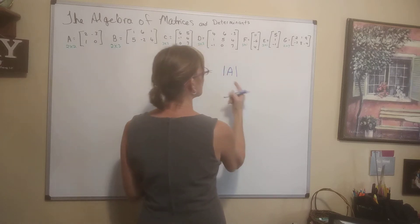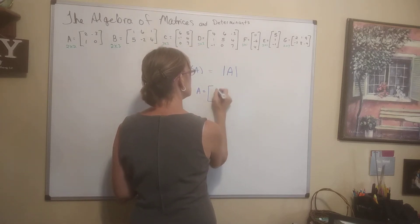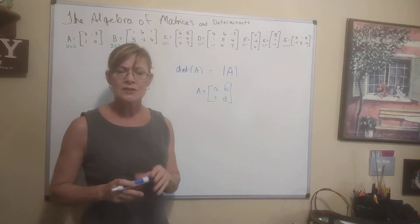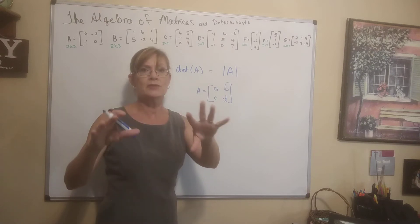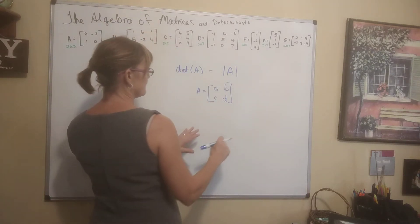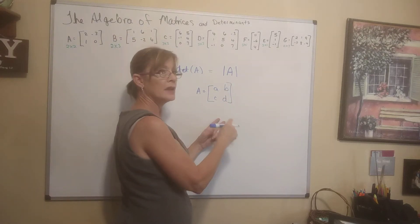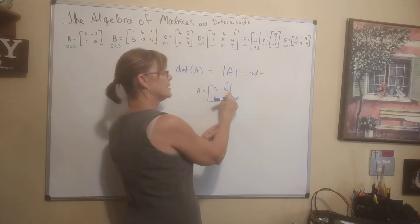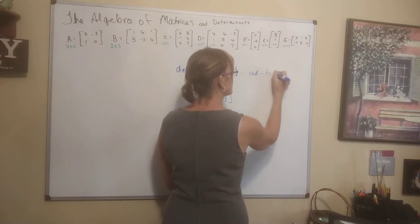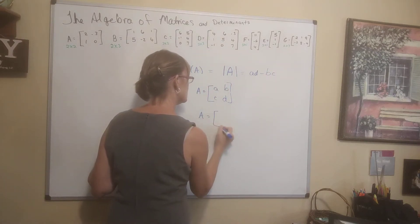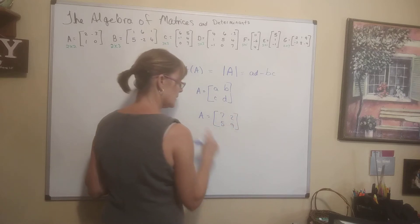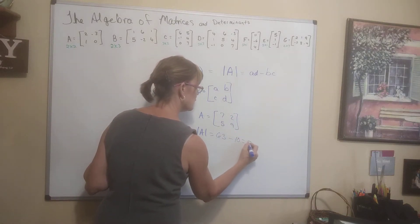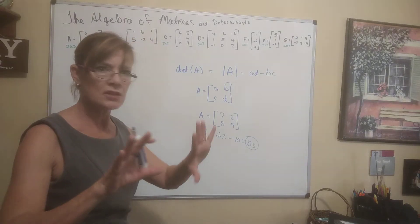The determinant of a 2 by 2 matrix A = [a, b; c, d] is a times d minus b times c. The notation for determinant is either det(A) or absolute value bars around the matrix — it doesn't mean absolute value, it means the determinant. For example, if A = [7, 5; 2, 9], the determinant is 7×9 − 5×2 = 63 − 10 = 53.